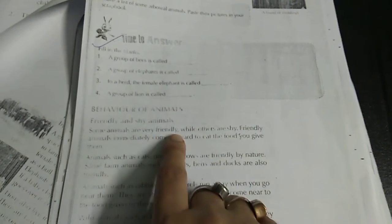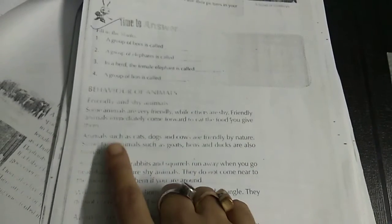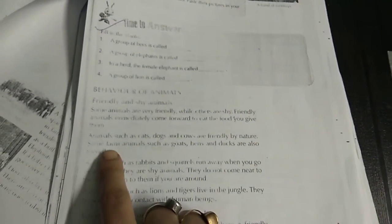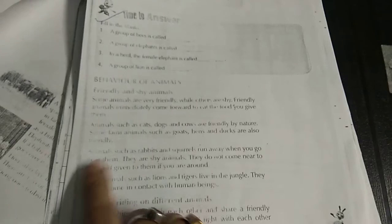Behavior of animal. Friendly and shy animal. Some animals are very friendly while others are shy. Friendly animals immediately come forward and eat the food you give them. Animals such as cat, dog, cow are friendly in nature. Some farm animals such as goat, hen and duck are also friendly.